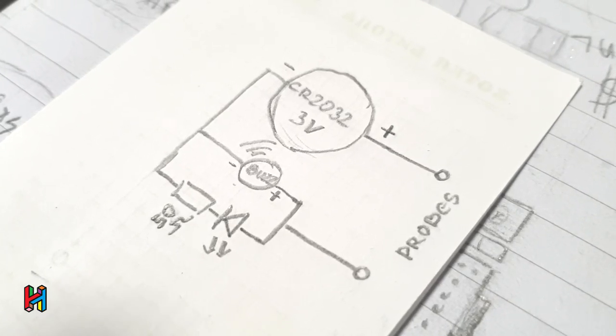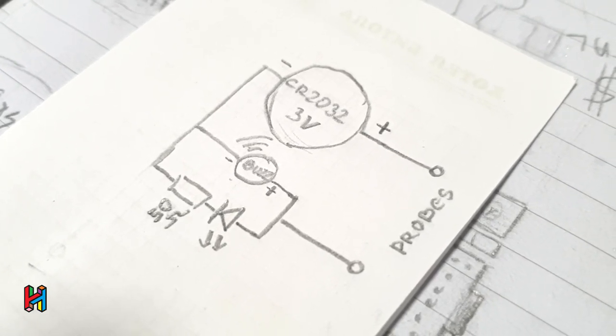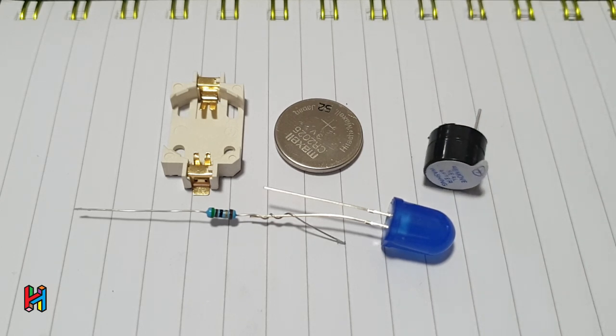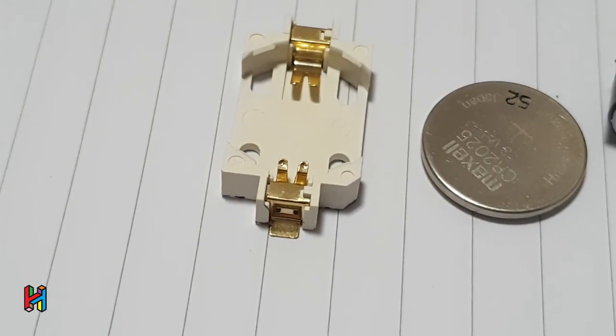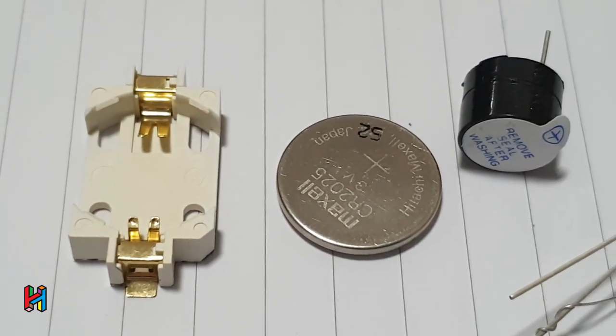Here is the schematic. And for making you need these parts: 3 volts coin battery and small holder, active buzzer, any color LED and resistor of 50 ohms for LED.